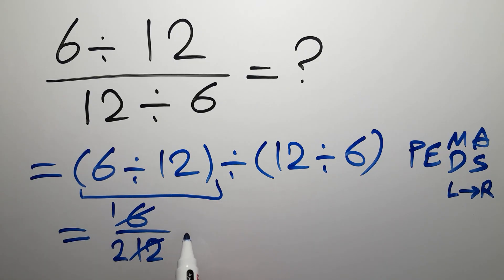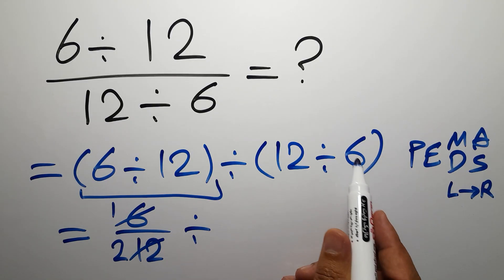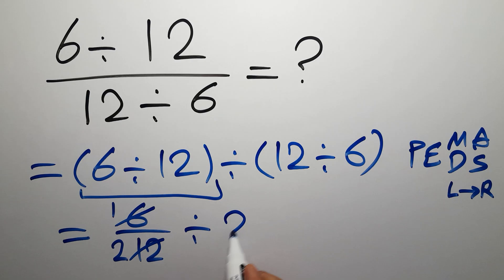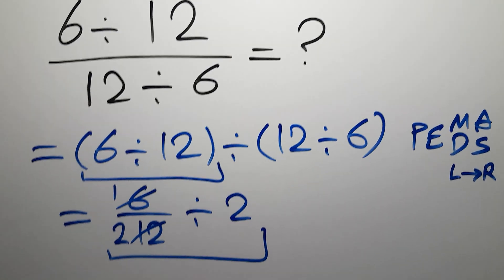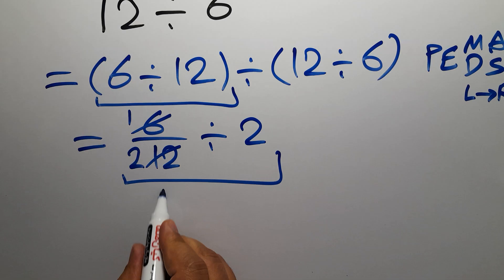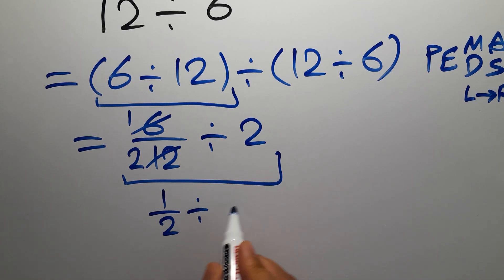So 1 over 2 divided by these parentheses. Inside these parentheses we have 12 divided by 6 which gives us 2. So we have 1 over 2, 1 over 2 divided by 2.